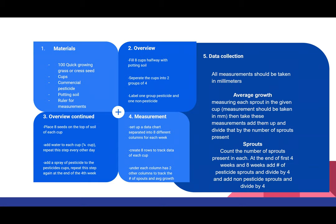I added eight seeds to each cup and separated them into two groups: one would receive the pesticide and one would not. I labeled them, set them out in the sun, and added pesticide to the pesticide cups. They received the pesticide spray at the beginning of the experiment, and then at the end of the fourth week I added a spray of pesticide again, to determine pesticide impact both at the beginning and as the experiment went on.